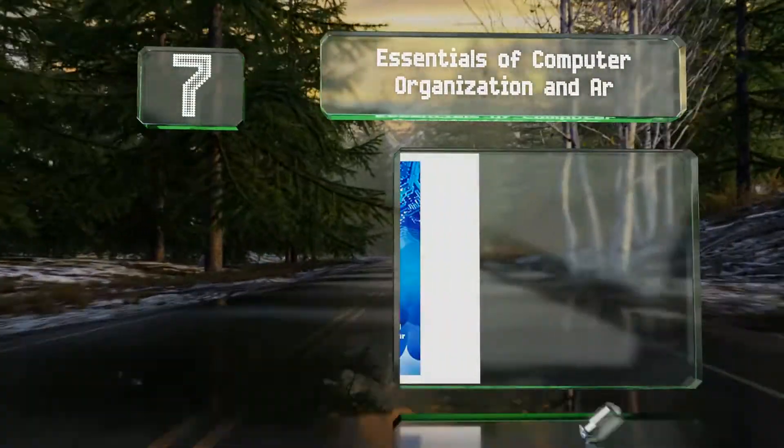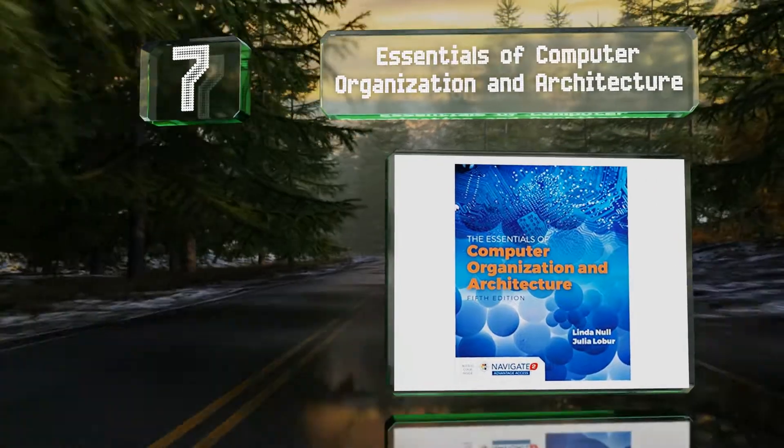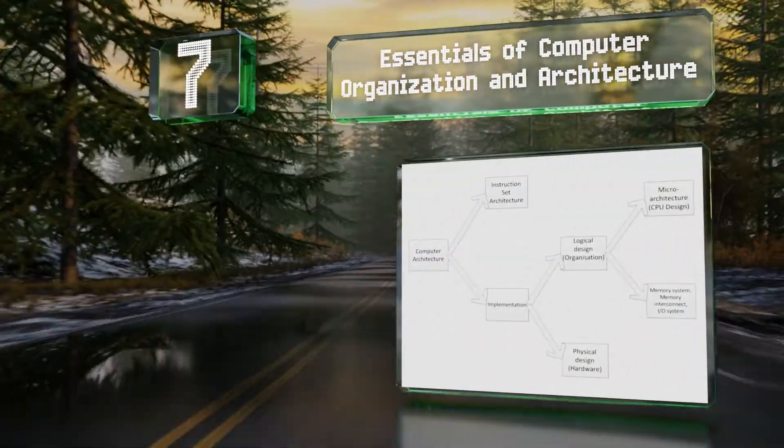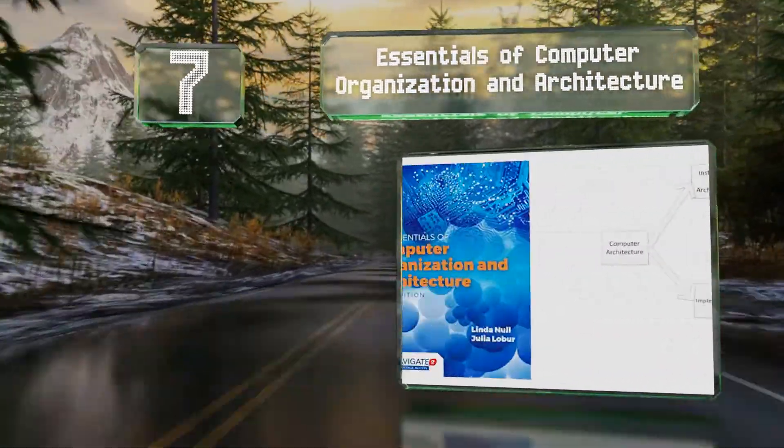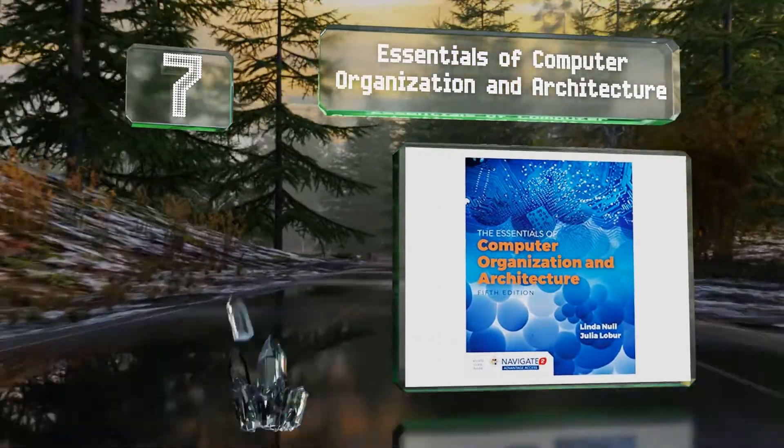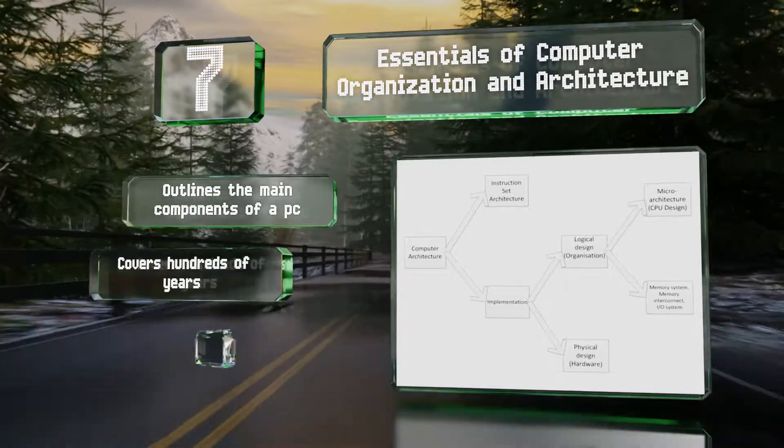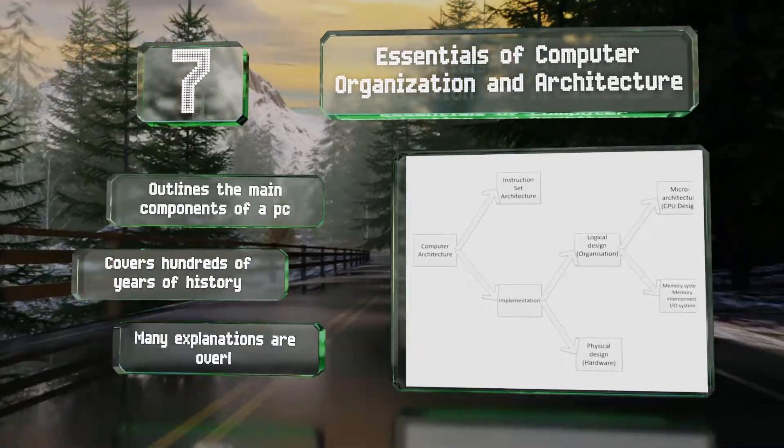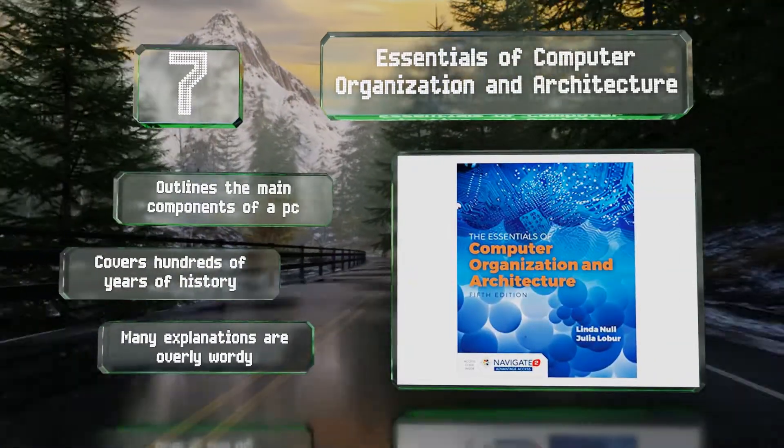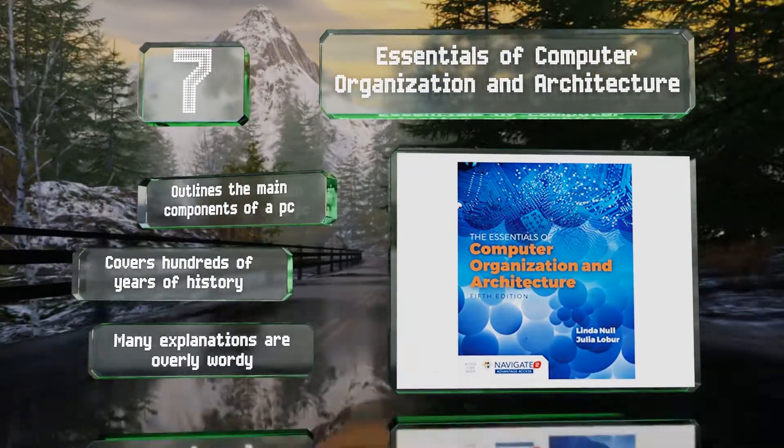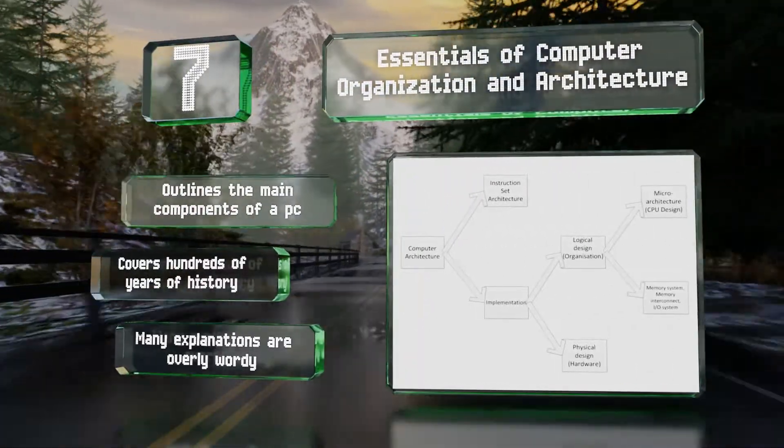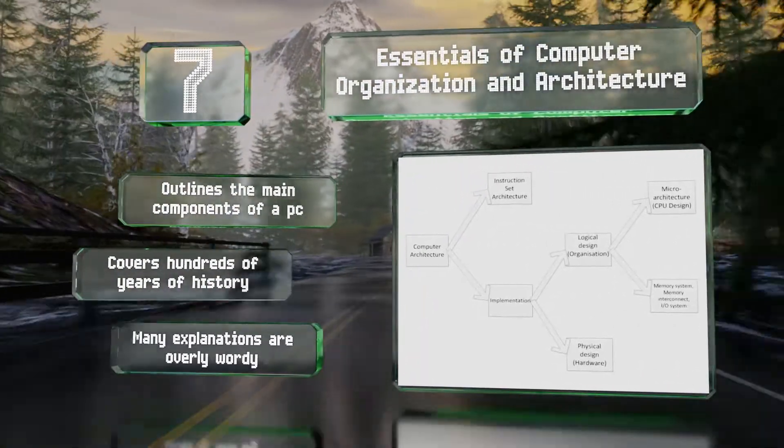At number 7, Essentials of Computer Organization and Architecture comes with access to Navigate to Advantage, which is an interactive ebook filled with practice activities and assessments. It has a broad scope, yet this one's concise enough for a single term. It outlines the main components of a PC and covers hundreds of years of history, but many of the explanations are overly wordy.